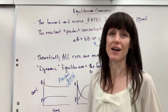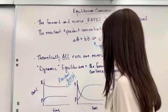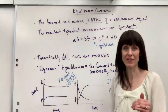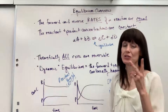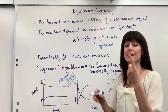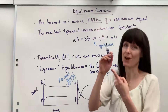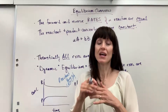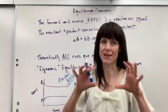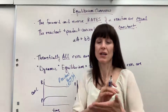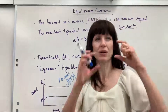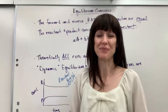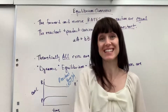So there you have it — laying the foundation. Your two big things: rates are equal when you have the forward and reverse reaction, and the concentrations are constant. Make a bumper sticker out of that. Put it on your mirror as you're doing equilibrium. Have a nice day. Thanks.